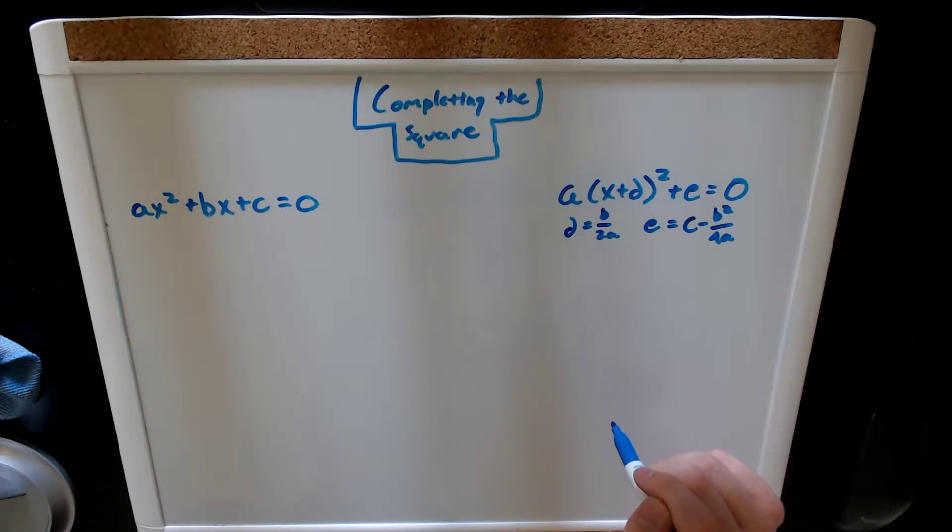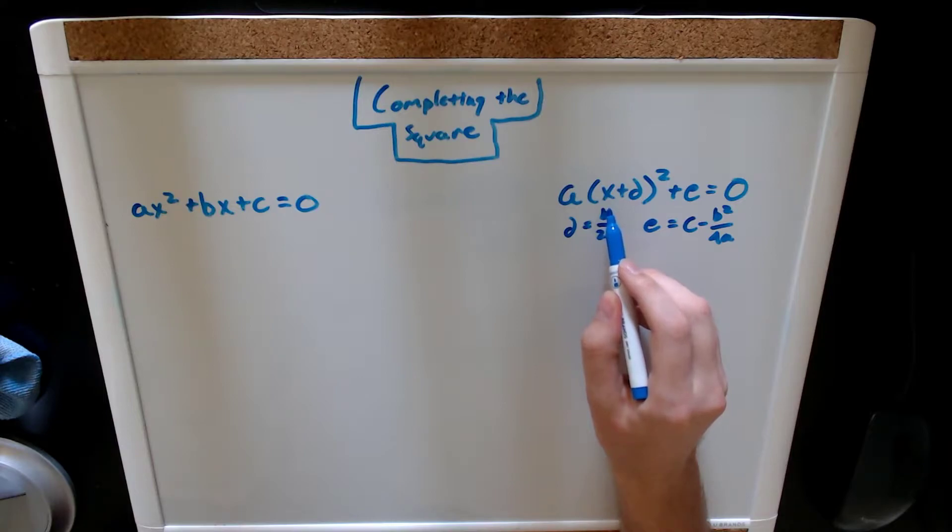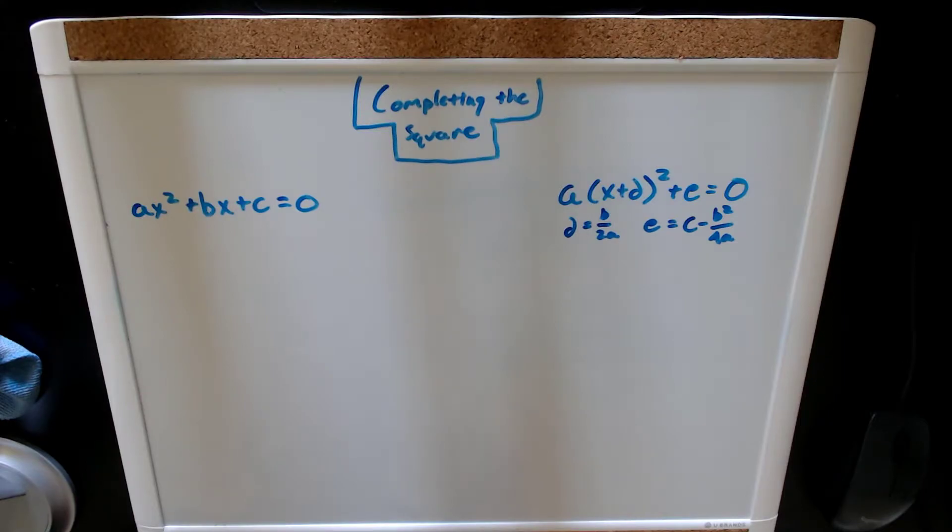All I'm going to do is point out that x here is on its own as its own individual term, whereas x is spread out over here between these first two terms, x squared.